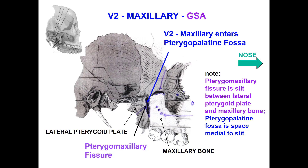Note that the pterygomaxillary fissure is a slit between the lateral pterygoid plate and the maxillary bone. The pterygopalatine fossa is a space medial to this slit.